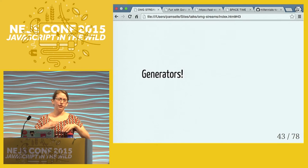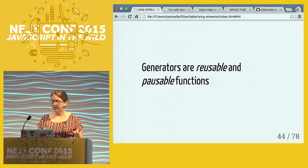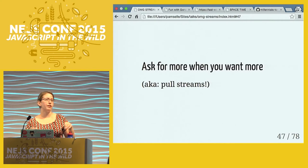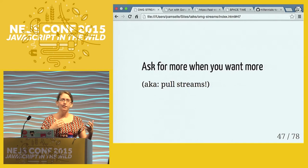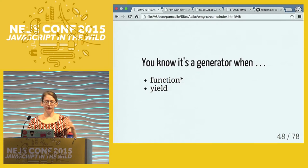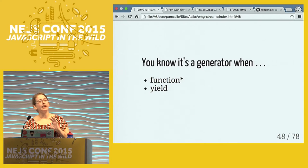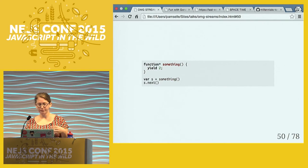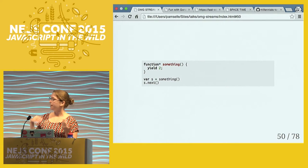Generators are a cool thing in ES6. We haven't really had something like them in JavaScript before. The definition: they're reusable and pausable functions - or are they pull streams? The way a generator works is you create an instance of this reusable and pausable function, also known as blocking, and you can ask for more from the generator when you want more. You call the next function and get the next value. You know you're using a generator when you see a function with a star and the yield keyword.